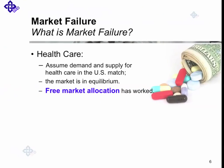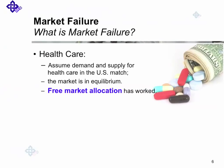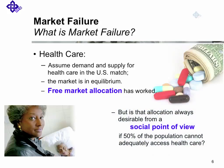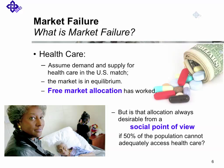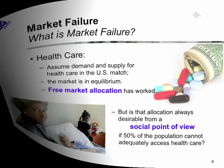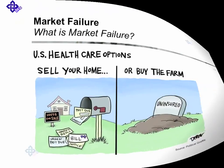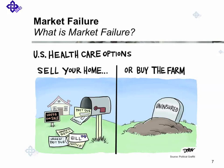Or look at the health market. Assume demand and supply for healthcare in the United States match — the market is in equilibrium. Free market allocation has worked again. But is that allocation always desirable from a social point of view if 50% of the population cannot adequately access healthcare? Again, that is what we discuss when we talk about market failure.